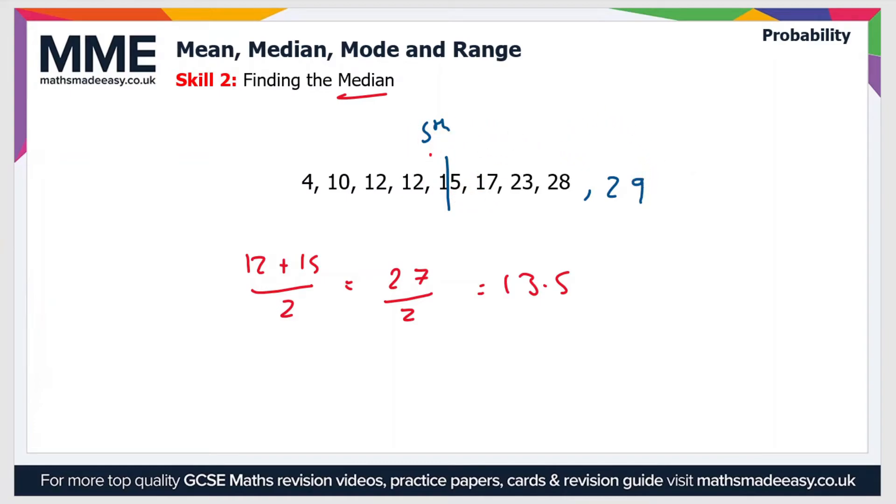So there's a formula that we can use to find out where the median lies in the list of numbers. And that formula is n plus 1 over 2. So if we had 8 as before, then n plus 1 over 2 is 9 over 2. So that's 4.5, which means that the median lies between the 4th and the 5th value.